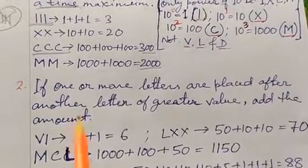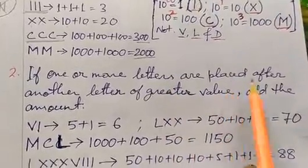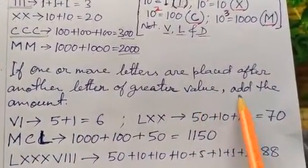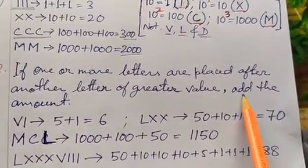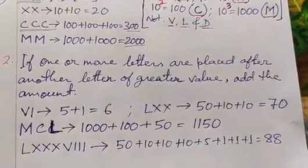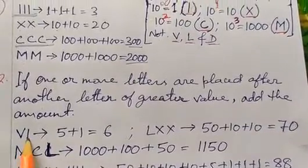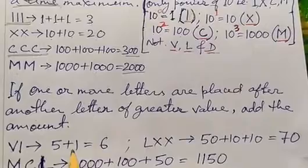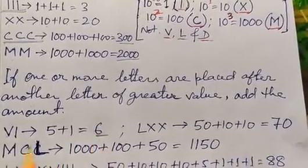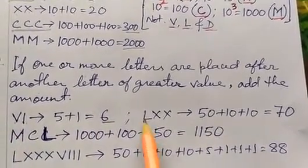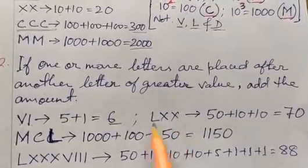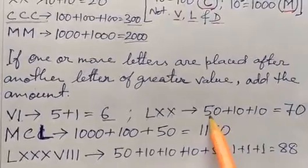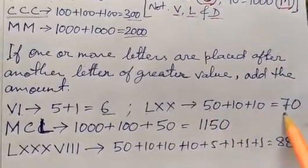The second principle: if one or more letters are placed after another letter of greater or equal value, then the values are added. For example, VI — V stands for 5 and I stands for 1 — so this becomes 6. LXX: L stands for 50, X is 10, and the second X is 10, so that becomes 50 plus 10 plus 10 equals 70.